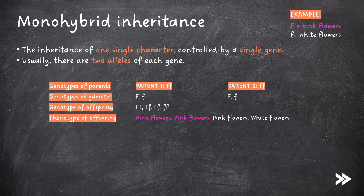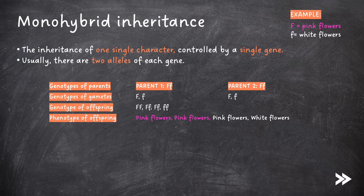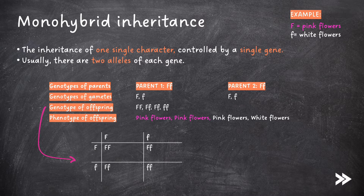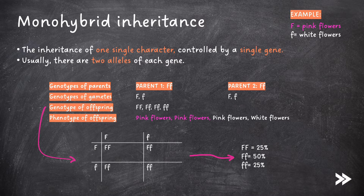Here we have an example. We have two parents, both of which are heterozygous, meaning that they have two different alleles, one dominant and one recessive. We can use an uppercase and lowercase F to represent their two alleles. We can use this to predict the genotype of the gametes, and then use this to predict possible genotypes of the offspring using what is called a Punnett square, which allows us to predict the various genotype combinations that we may have and the probability of each occurring. In this example, we have one homozygous dominant, two heterozygous, and one homozygous recessive — a 25% chance of homozygous dominant, a 50% chance of heterozygous, and 25% chance of homozygous recessive offspring.